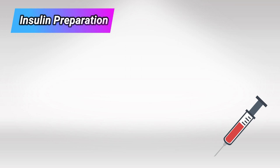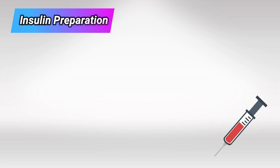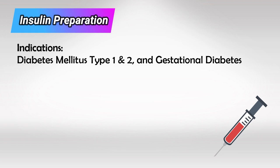The injectable insulin preparations can be used for all types of diabetes, like type 1, type 2, and gestational diabetes. It works exactly like any other insulin by stimulating the insulin receptor, which is a tyrosine kinase receptor, and this triggers effects in three organs: the liver, the muscle, and fat.